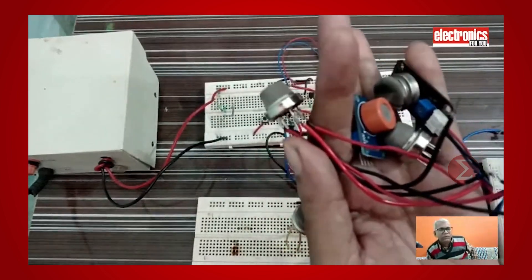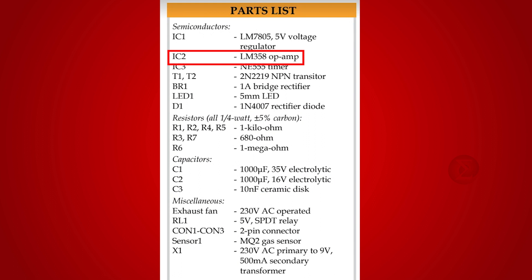An operational amplifier IC LM358 and a passive buzzer. Only one operational amplifier is used as a comparator to drive a buzzer if any gas leakage is encountered. One relay to turn on the exhaust fan automatically if gas leaks in the kitchen.